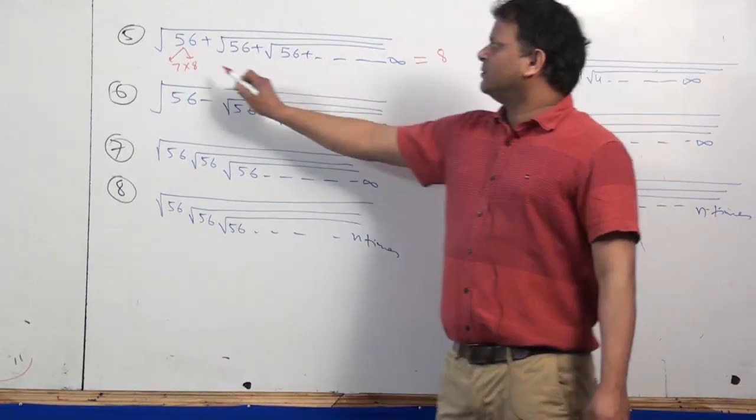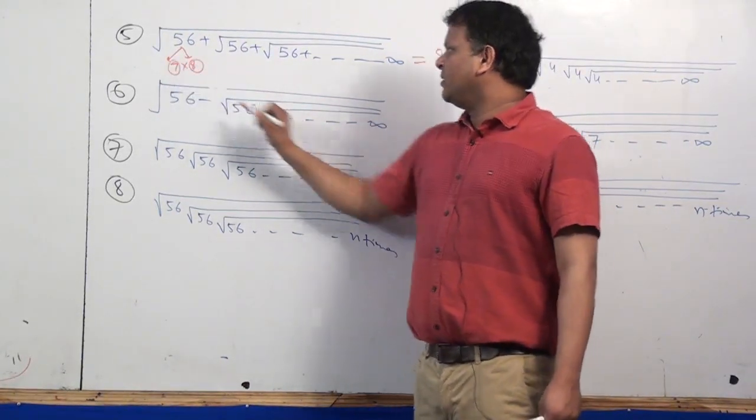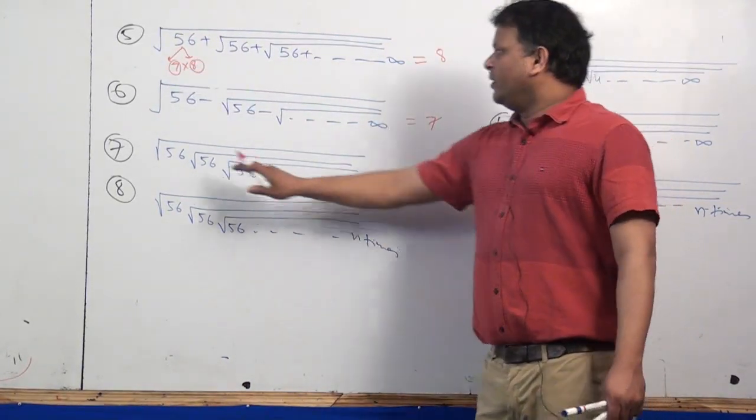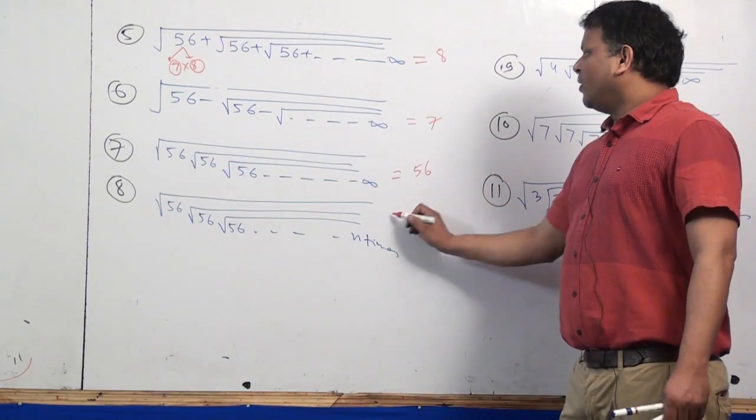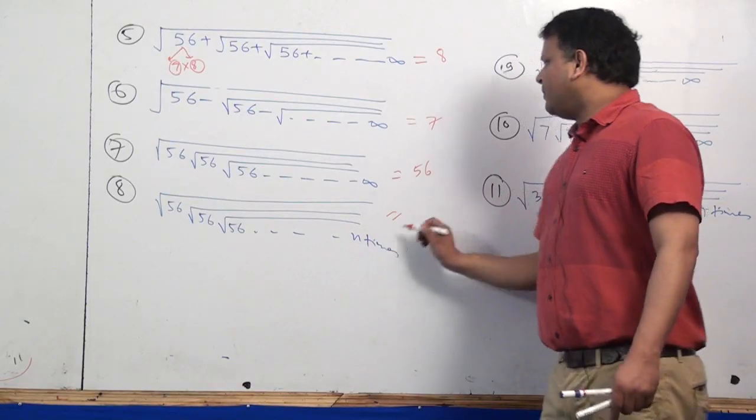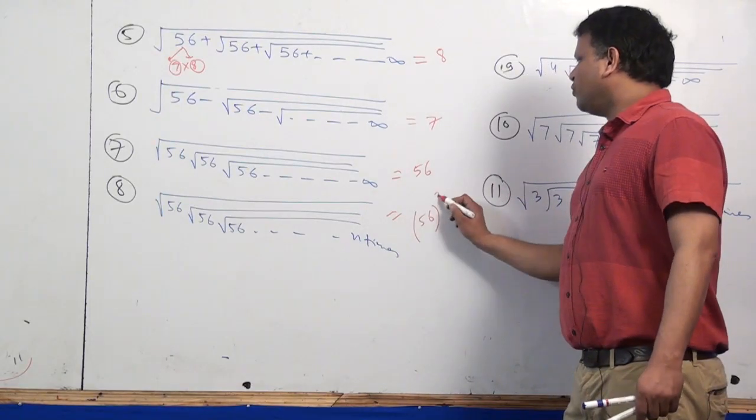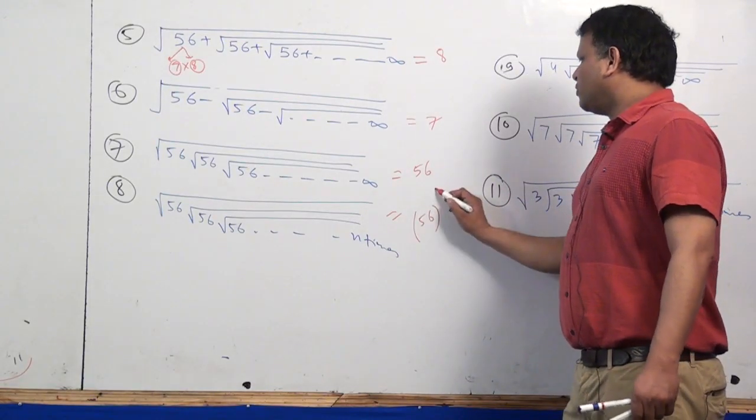It will be plus, subtraction is 7. Into infinity, what do you do? And into n times, which number will it be? It will be the number. What is the number?